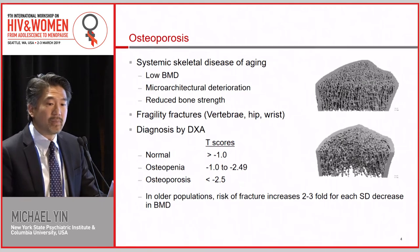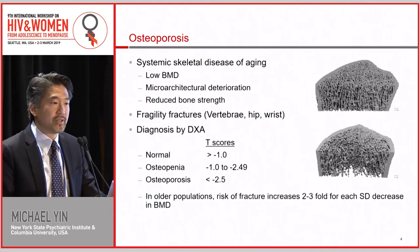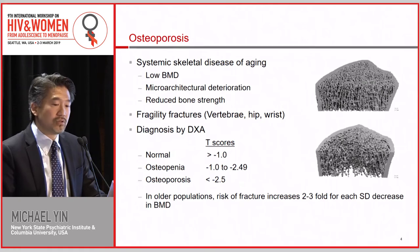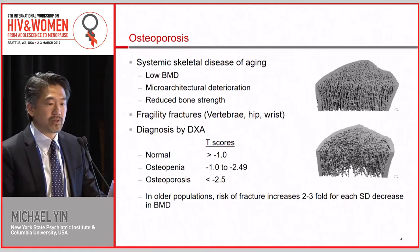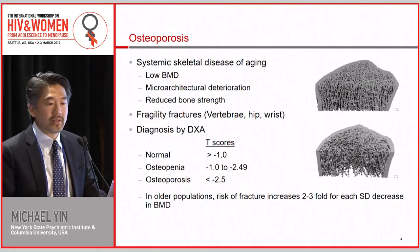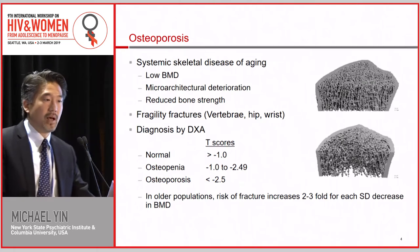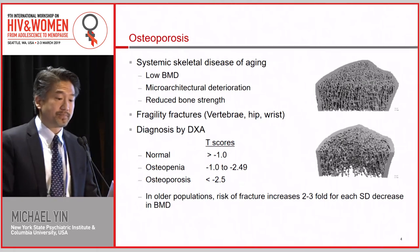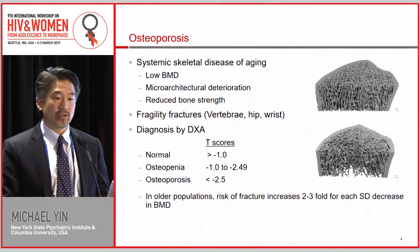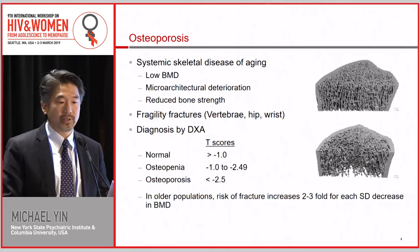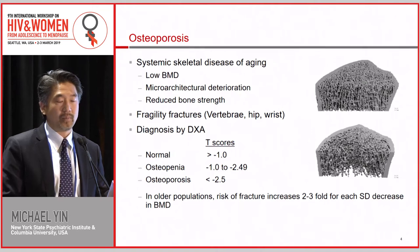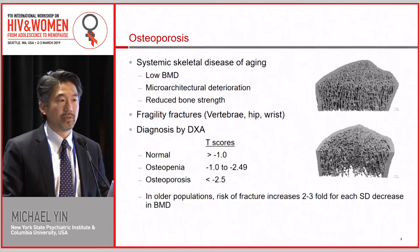Diagnosis is by DEXA — dual energy x-ray absorptiometry — and they usually talk about T-scores. T-scores of greater than two and a half standard deviations below that of a young normal person of your same sex means that you have osteoporosis. This has great predictive ability in older populations because the risk of fracture increases two to threefold for each standard deviation decrease in bone mineral density.